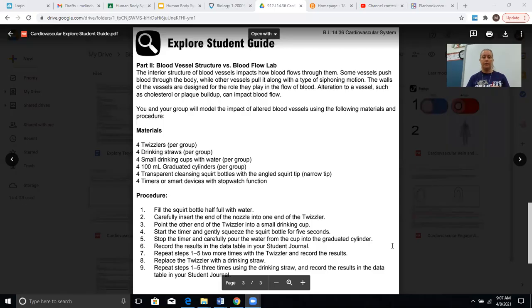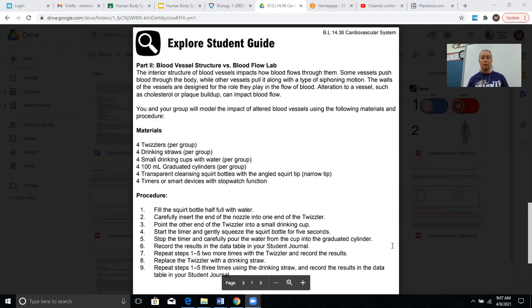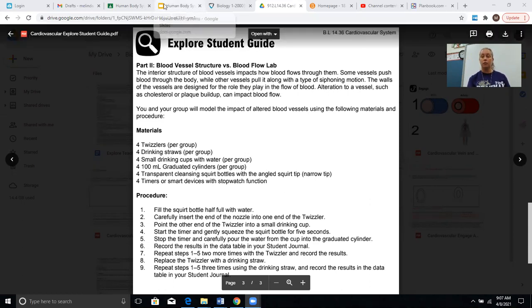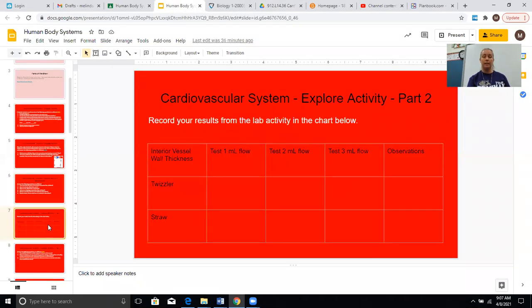So now it says we're going to point the other end of the Twizzler into a small drinking cup, start the timer and gently squeeze the squirt bottle for five seconds. You should not be squeezing it super hard. It is a gentle squeeze. And once the timer goes off, we're going to pour the water from the cup into a graduated cylinder. And then we're going to record our results in the data table. Then we're going to repeat steps one through five two more times with the Twizzler. Then we're going to switch and use a straw and do the same thing, recording our information in our digital notebook.